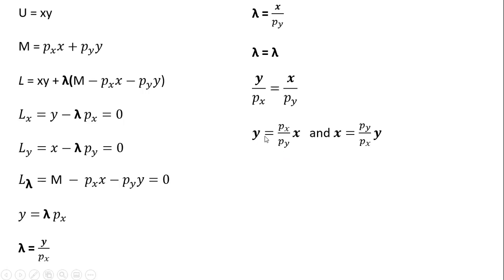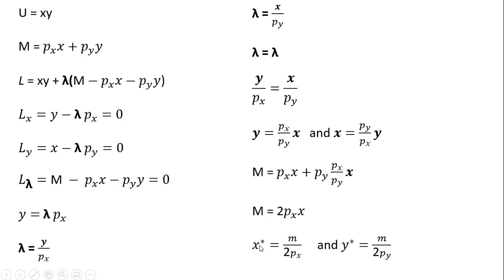I'm going to take the first result — y equals the price of good x divided by the price of good y times x — and plug it into our constraint, substituting in for y. Solving for x, x star is the Marshallian demand, the ordinary demand for good x. Then I substitute x equals the price of good y divided by the price of good x times y into the constraint and solve for y, obtaining the Marshallian or ordinary demand for good y.